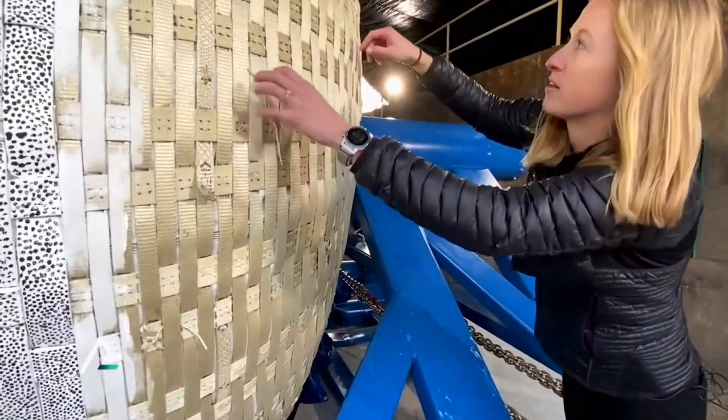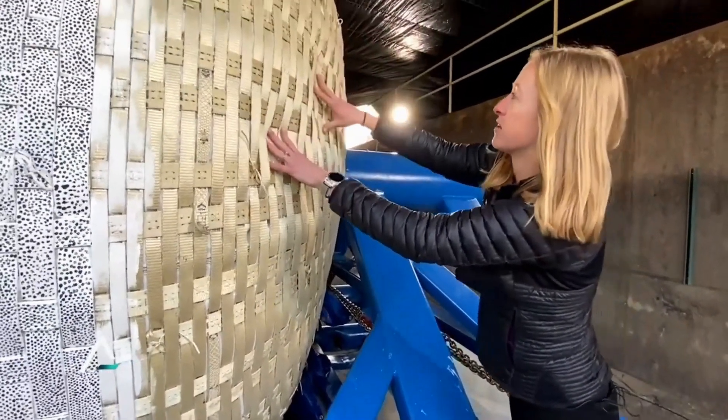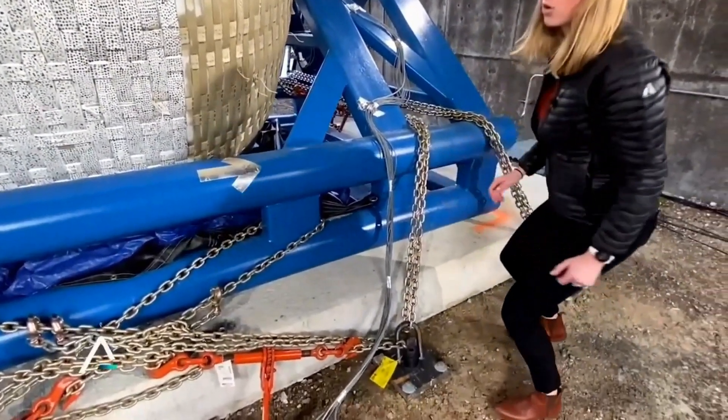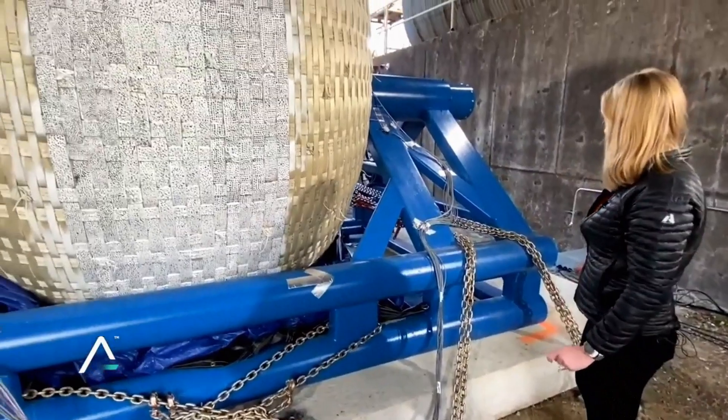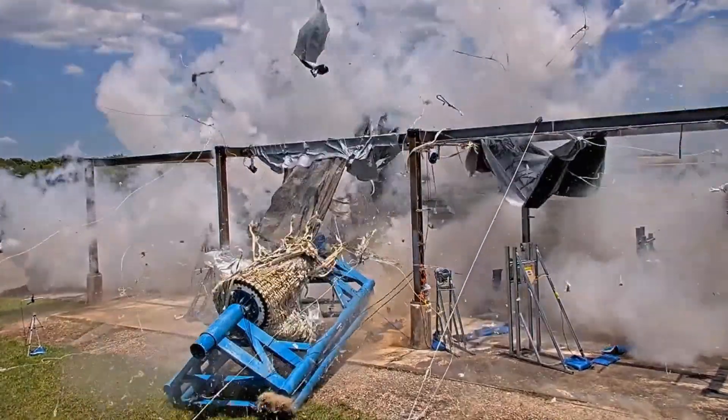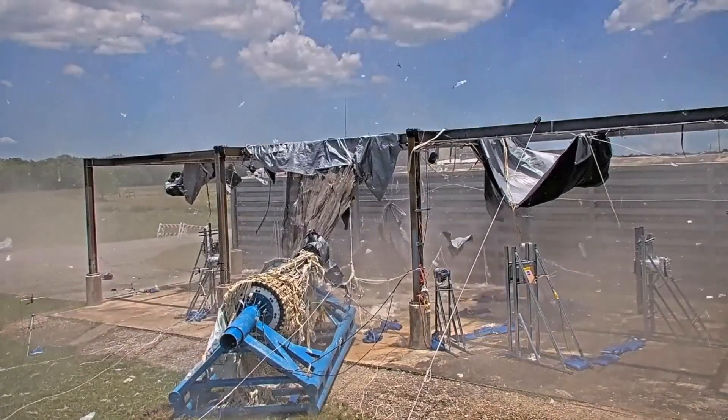They put 192 psi in it and it was chained down on these big steel, like gigantic chains and everything else. And there was about eight of them on there. And when it blew, it took the entire frame and pushed it out through the side of the building.